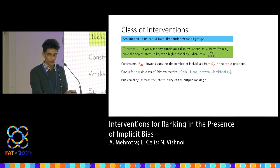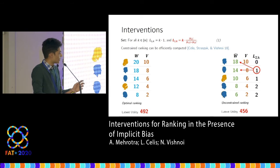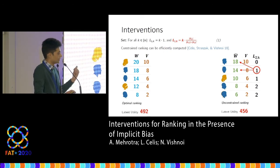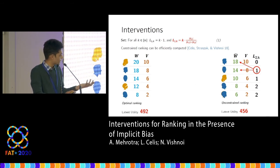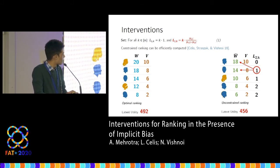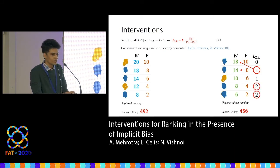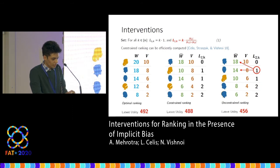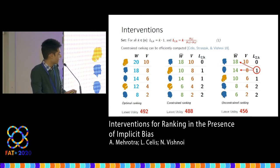Similar constraints are known to encapsulate a wide range of fairness metrics, but it's not clear whether they are useful when mitigating implicit bias. We look at constraints which force the ranking to pick at least a proportional number of candidates in every top K position — these are shown in red. Looking at the traditional ranking, we can see that it tends to violate these constraints; in particular, it doesn't select any underprivileged candidates in the top two positions, and also violates constraints at the fourth and fifth positions. Comparing this to the ranking which satisfies the interventions, we see that it places underprivileged candidates higher up, and in this example it also recovers most of the lost utility — getting 488 versus the optimal of 492.